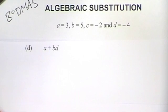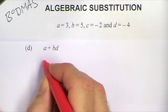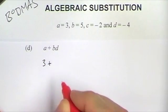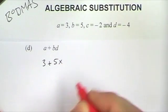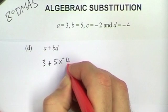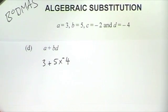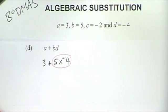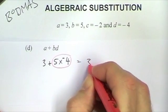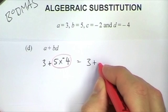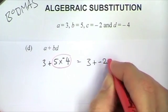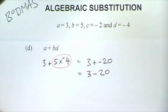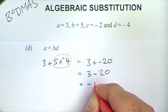The next expression is a plus bd. So that's a, which is 3, plus bd — that's b times d, which is 5 times minus 4. I must do the multiplication first. So that's going to be 3 plus 5 times minus 4, which is minus 20. And that's equal to 3 minus 20, because the plus and minus keeps it as a minus. And that's going to be minus 17.